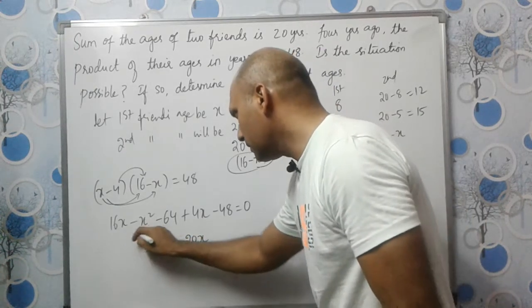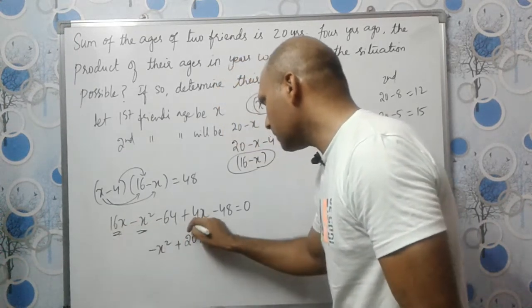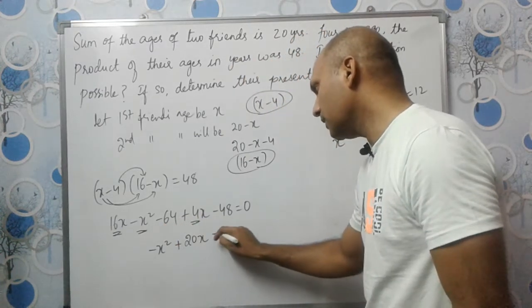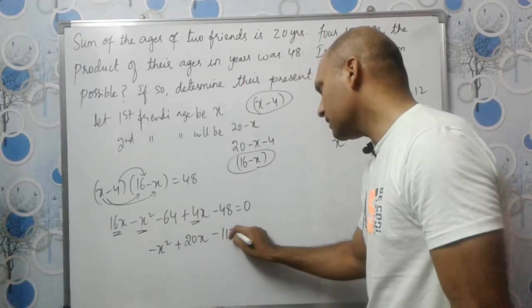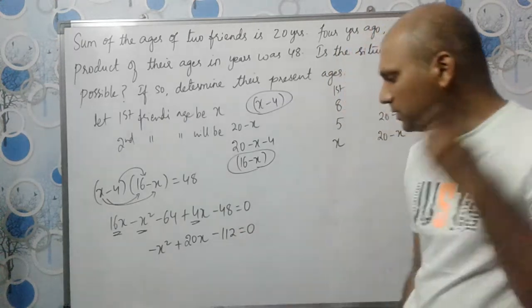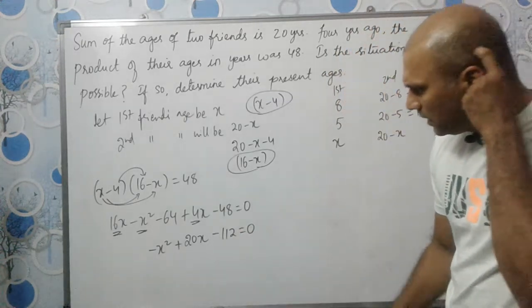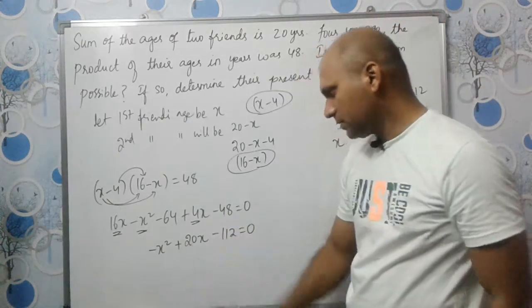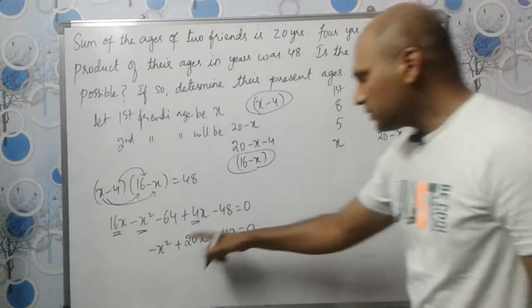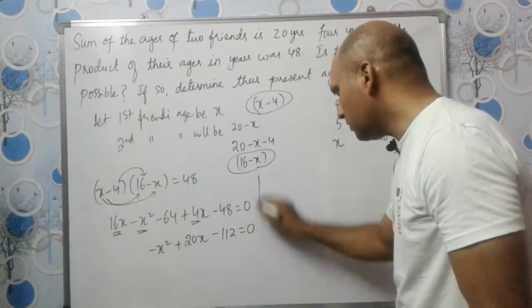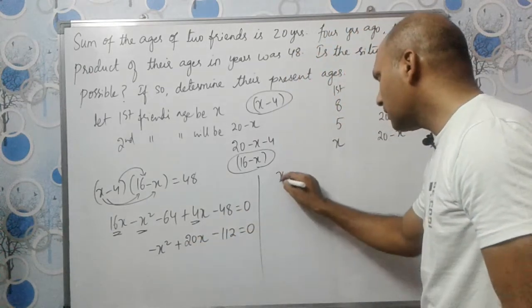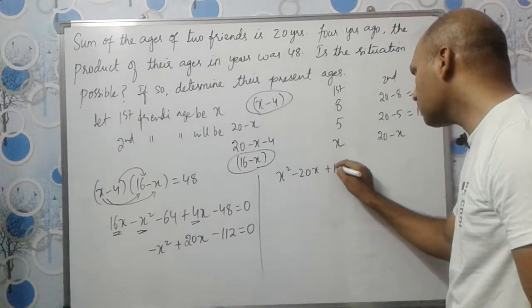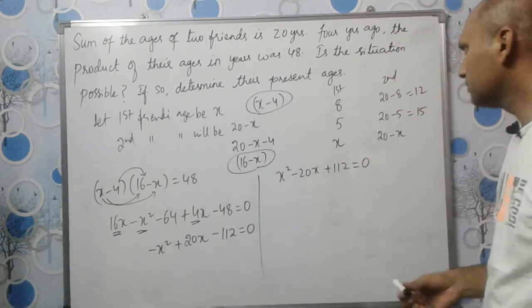Combining: minus X squared plus 20X minus 112 equals 0. Taking minus common, this becomes X squared minus 20X plus 112 equals 0.